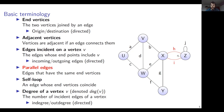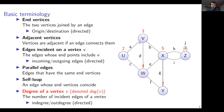Parallel edges are edges that have the same end vertices. H and I both have end vertices X and Z, so H and I are parallel edges. A self-loop is an edge where the end vertices coincide — J has only Z as both end vertices, so J is a self-loop. The degree of a vertex is the number of edges incident on that vertex; V has edges A, D, and B, so it has a degree of 3. In a directed graph we consider in-degree and out-degree, where in-degree counts incoming edges and out-degree counts outgoing edges.